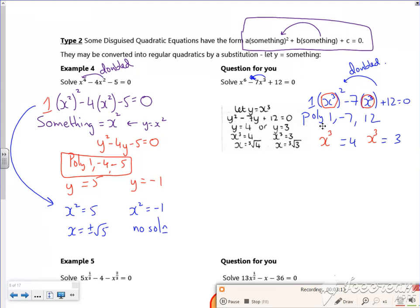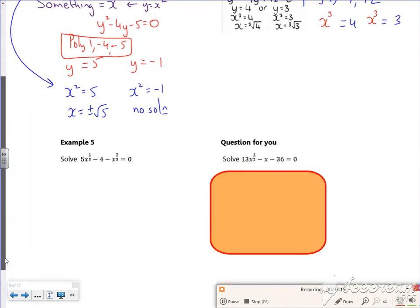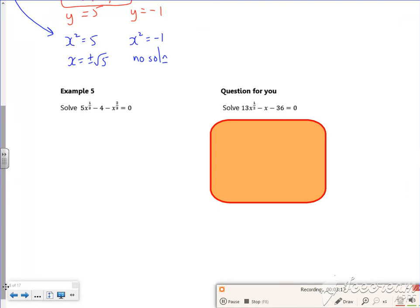Once you spot it, you can leap your way through it. Let's have a look at this one, this next example. So that power there is doubled. So it's a little bit backwards. So I'm just going to move everything over to the other side. So I've got x to the power two-thirds minus five x to the power a third plus four is equal to zero.